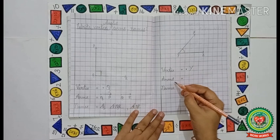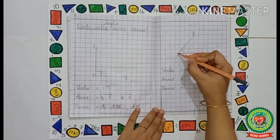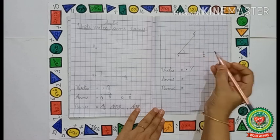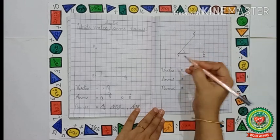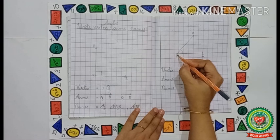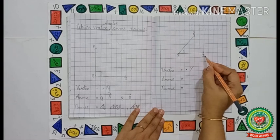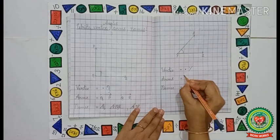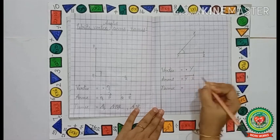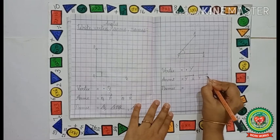Now we have to identify the arms. Arms are the two rays of the figure. As I have told earlier, when we name the arms, we must start with the vertex. So vertex is Y. We will write the arms as YX and YZ, and put the symbol of arm YX and YZ.